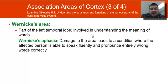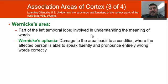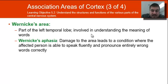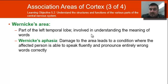Wernicke's area is in the left temporal lobe, and it's involved in hearing and understanding words. If you get Wernicke's aphasia, damage to this area leads to a condition where the affected person can speak fluently, but cannot understand what's going on.